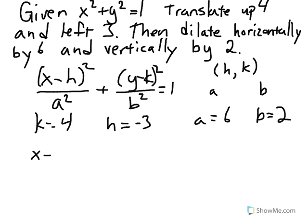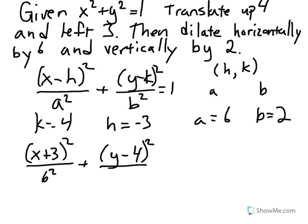x minus negative 3. So since it's x minus negative 3, it becomes x plus 3 squared divided by 6 squared plus y minus k. So since k is 4, it's going to be y minus 4 squared divided by b squared, which in this case is 2. So 2 squared equals 1.